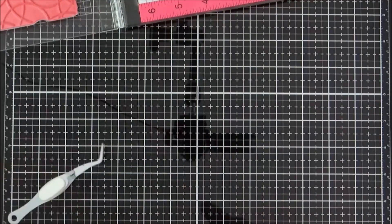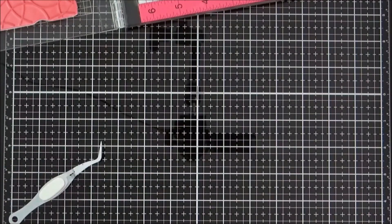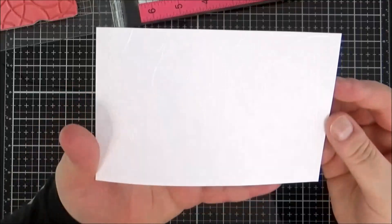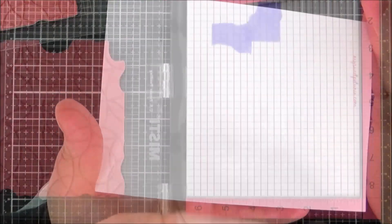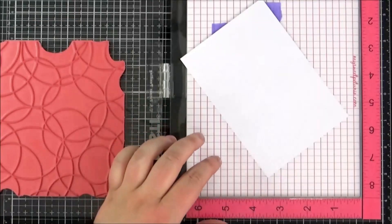I'm using my reverse tweezers to hold that piece so I don't burn my fingers. It's very difficult to see on camera, unfortunately. That's the problem with clear embossing powder on white cardstock.